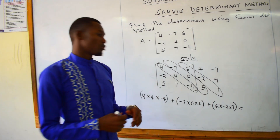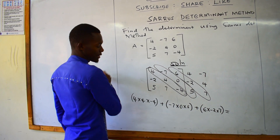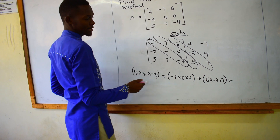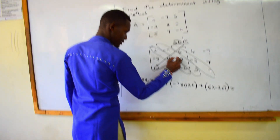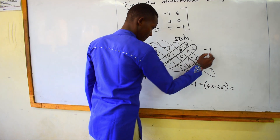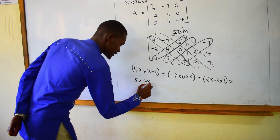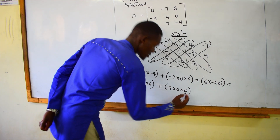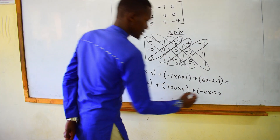Then you come back and work out the other diagonals — the ones going from the right-hand side to the left-hand side corner. So you take 5 times 4 times 6, plus 7 times 0 times 4, plus negative 4 times negative 2 times negative 7.